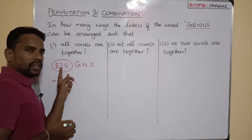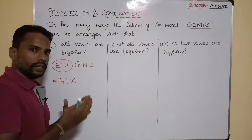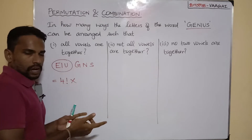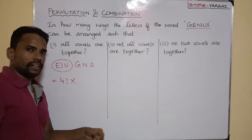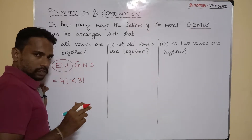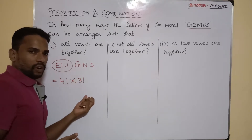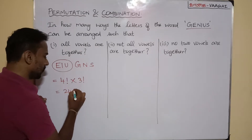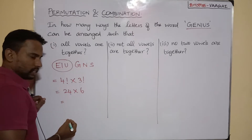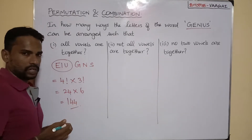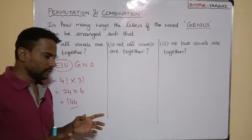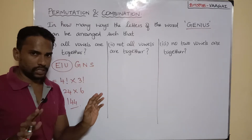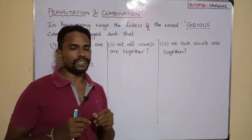But the problem is not yet over. For each of those 4! arrangements, the three vowels within the group can themselves be in any order — E I U, or I E U, or U I E, and so on. So for arranging those three vowels within themselves, we have 3! additional ways. The overall answer is 4! × 3! = 24 × 6 = 144. That is the answer for the first question.